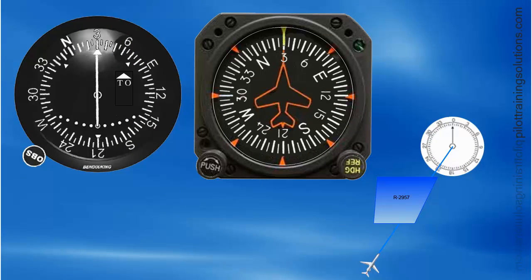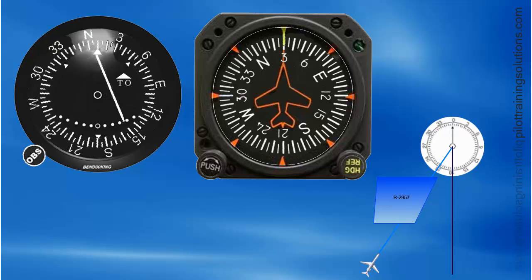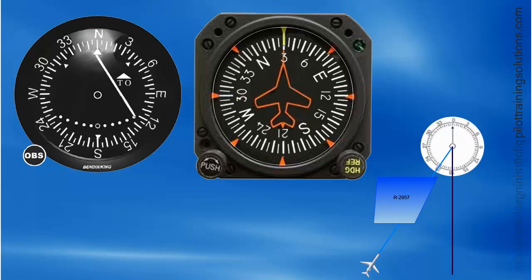ATC tells you to intercept the 180 radial and track it to the station. Remember that a radial is always from the station, and since we have to go to it, we will be flying the reciprocal — a heading of 360. So the first thing to do is to twist the OBS until we have 360 on the top.